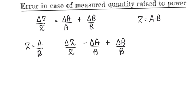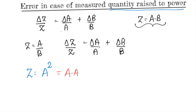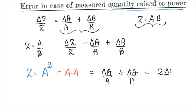For a quantity raised to power form, if z = a², then we can say this is nothing but a·a, and using the same method for multiplication it would be δa/a + δa/a, which equals 2·δa/a. That is our relative error δz/z.